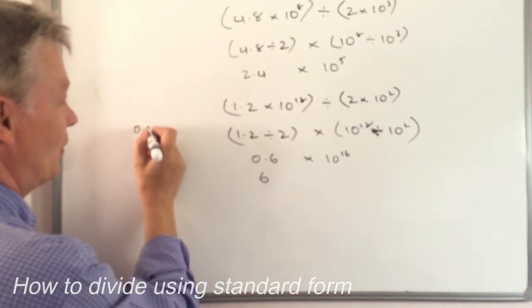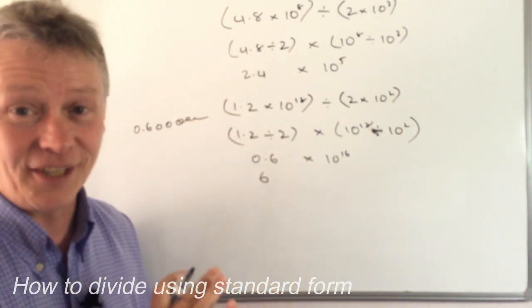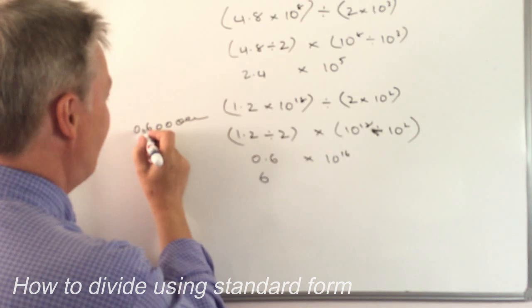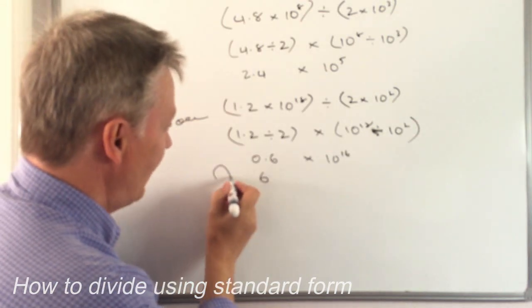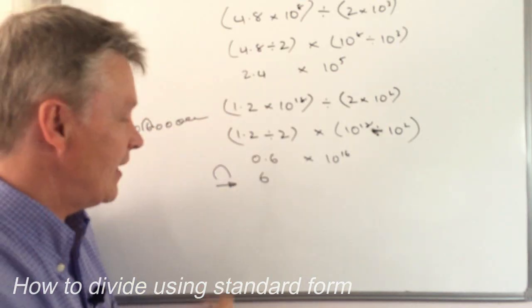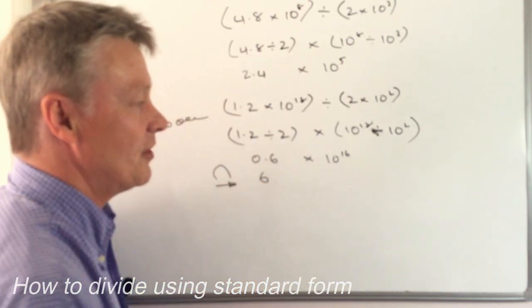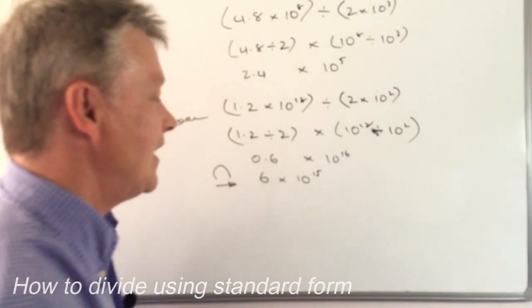So I've got 0.6, 0, 0, 0, 0, 0, all the way out of 16 different zeros. Well, I actually need to move my decimal point one place in this direction. Well, if I move it in this direction, this number reduces. So it becomes 6 times 10 to the power of 15.